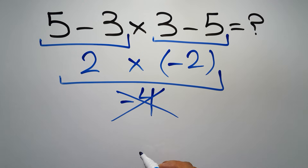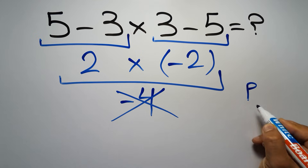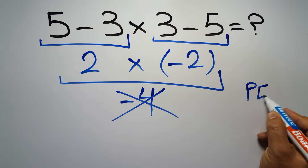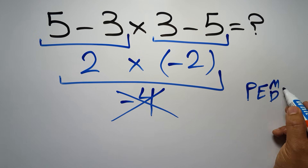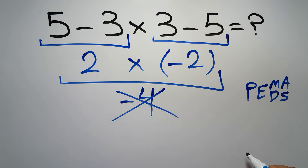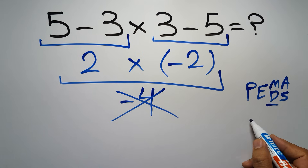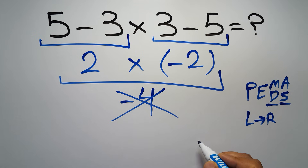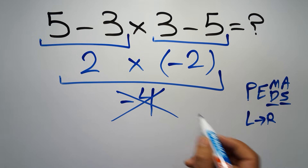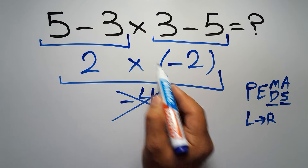According to the order of operations, first we have to do parentheses, then exponents, then multiplication or division, and finally addition or subtraction. Remember that multiplication and division have equal priority and we have to work from left to right. The same applies to addition and subtraction.